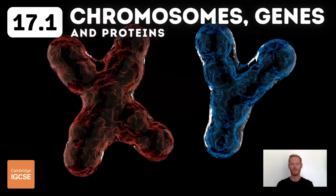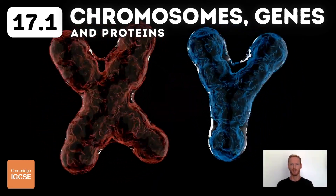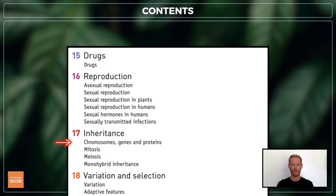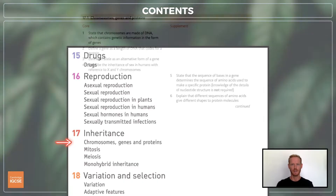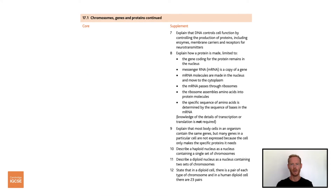Hello and welcome to another complete Cambridge IGCSE biology lesson, where you'll learn absolutely everything you need to know on topic 17.1, chromosomes, genes and proteins. As always, we'll be following the Cambridge syllabus exactly and we'll cover absolutely everything you need to know for your final exam.